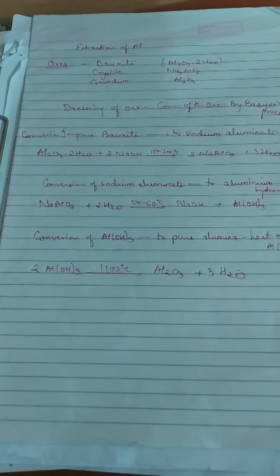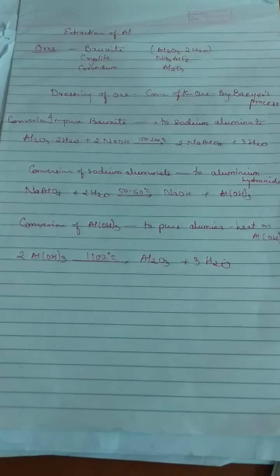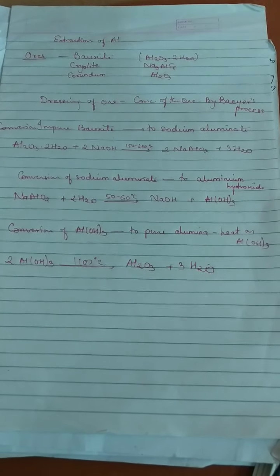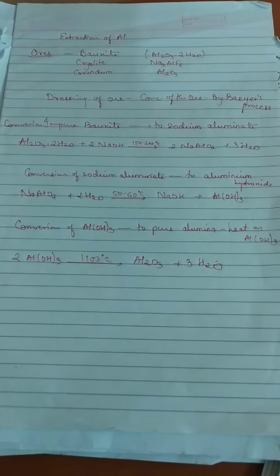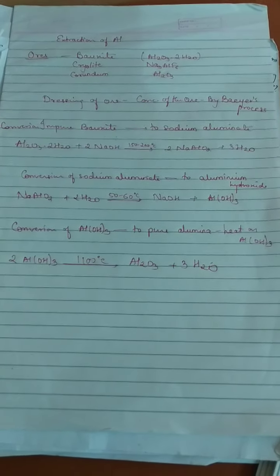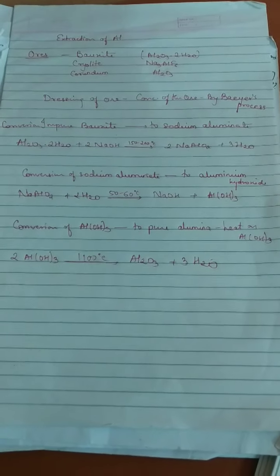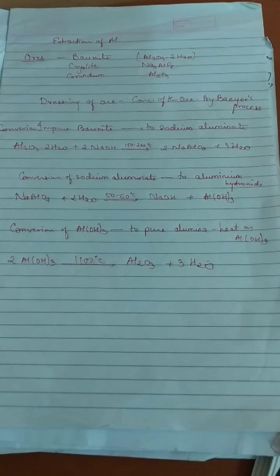Good morning children, welcome to chemistry class. Let us move towards point six of the lesson: metallurgy, that is extraction of aluminium using Bayer's process.